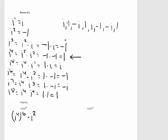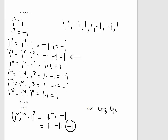i to the fourth is equal to 1, so I want to divide out as many i to the fourth as possible. Let's simplify i to the 26th. I ask myself how many i to the fourth can I take out of i to the 26th — that's 6. So I rewrite it as i to the fourth taken to the 6th power, times i squared. 4 times 6 is 24, plus 2 is 26. i to the fourth is 1, so 1 to the 6th is 1, times i squared which is negative 1, giving negative 1. So whatever my remainder is, I take i to that power — that's my answer.